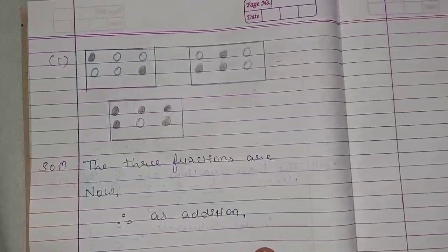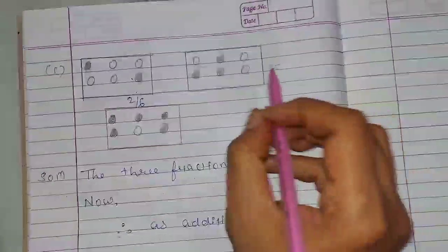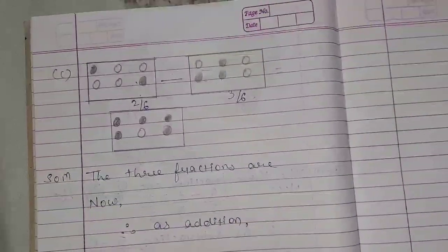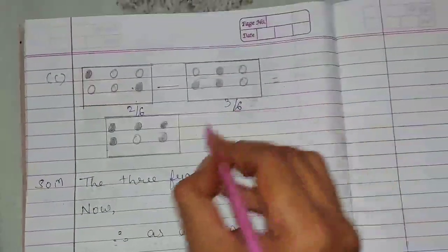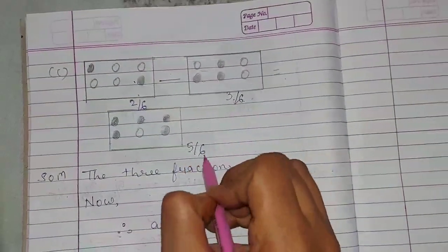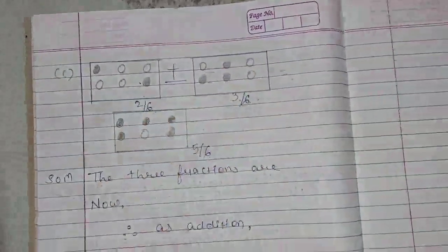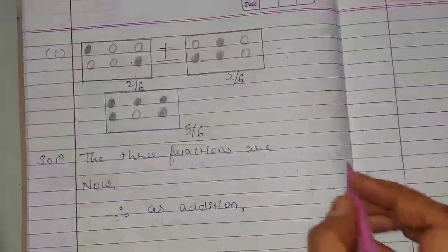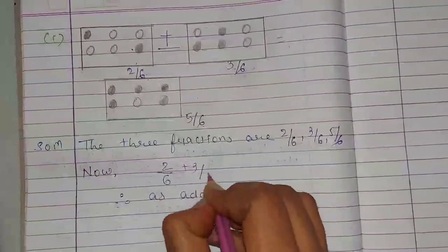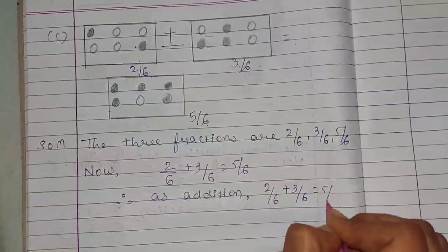Question number C. Inside the box, 6 circles are drawn. 2 parts are shaded for the first, so 2 upon 6. For the second part, 3 circles are shaded, so 3 upon 6. And 5 circles are shaded in the third, so 5 upon 6. If we add 2 upon 6 and 3 upon 6, we get 5 upon 6. These are like fractions, and 2 plus 3 equals 5, so the addition sign comes. Therefore, as addition: 2 upon 6 plus 3 upon 6 equals 5 upon 6.